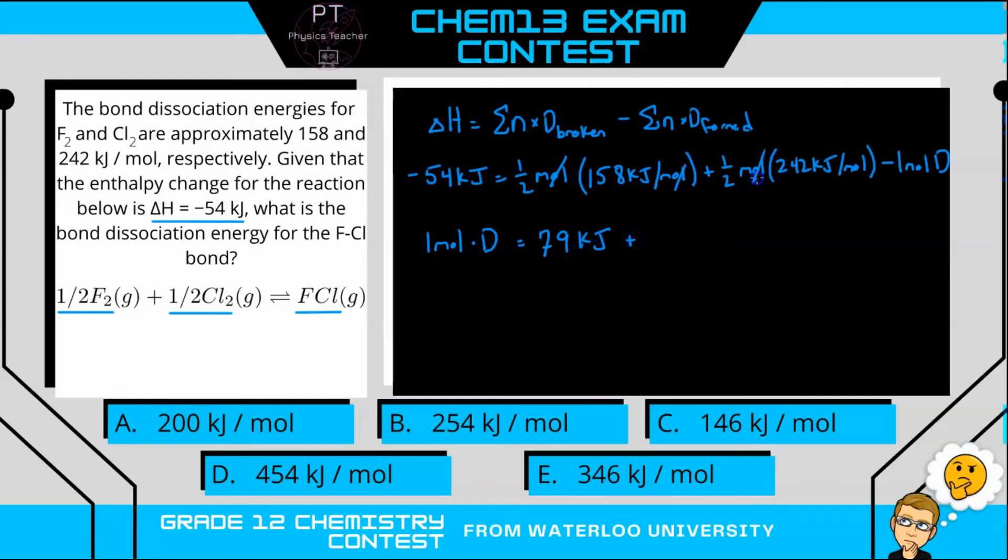Plus, here we have one half, again the moles cancel, times 242, which gives us 121 kJ. And then if we bring this term to this side of the equation, the sign changes, and we add 54 kJ. So that leaves us with one mole times D equals 254 kJ.